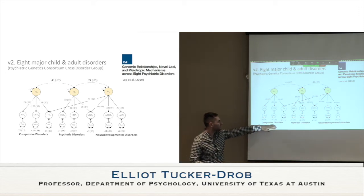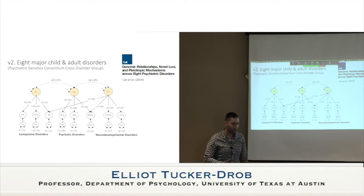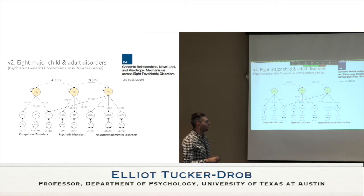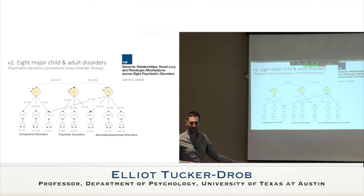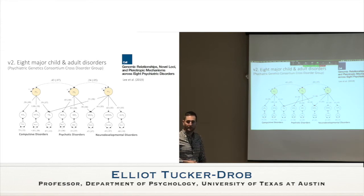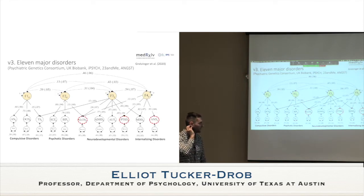We ended up with three factors: compulsive disorders (including anorexia, obsessive-compulsive disorder, and Tourette syndrome); psychotic disorders (primarily schizophrenia and bipolar, but also with a major depression loading); and neurodevelopmental disorders (ADHD and autism). We suspected the major depressive disorder loading was split between the neurodevelopmental and psychotic factors because it didn't have any buddies — there were no anxiety disorders in this dataset. Anxiety disorders and depression respond to the same treatments, are affected by similar mechanisms, and are both strongly correlated with neuroticism.